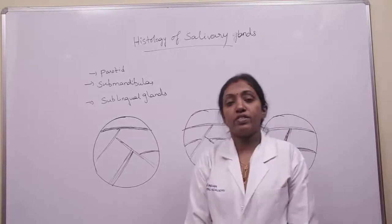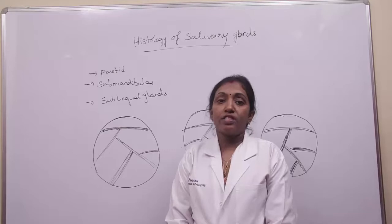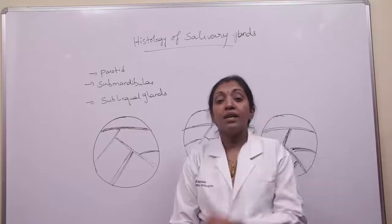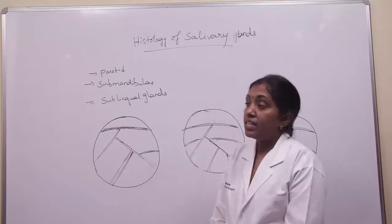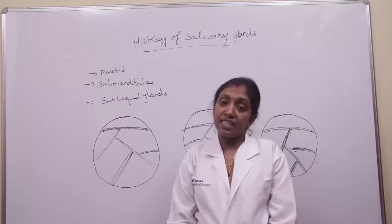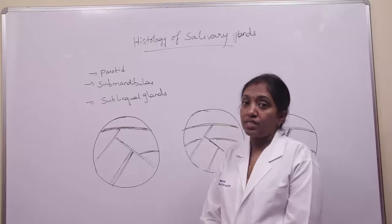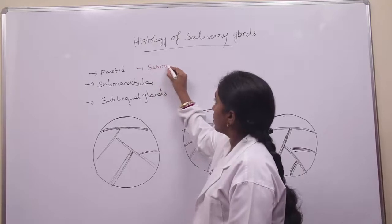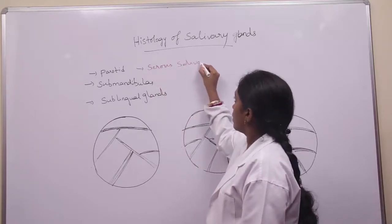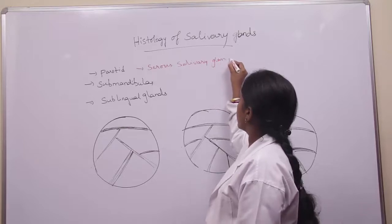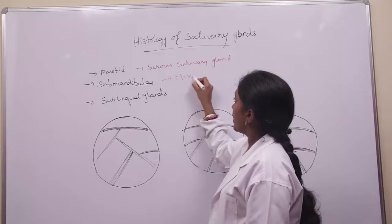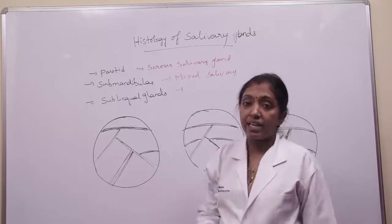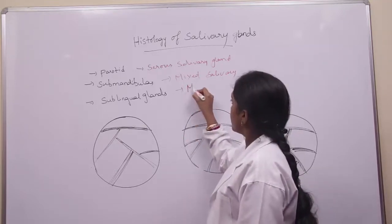Coming to the histology of salivary glands, there are three important types of salivary glands: the parotid gland, the submandibular gland, and the sublingual gland. The parotid gland is a serous salivary gland, the submandibular gland is a mixed type of salivary gland, and the sublingual gland is a mucosalivary gland.